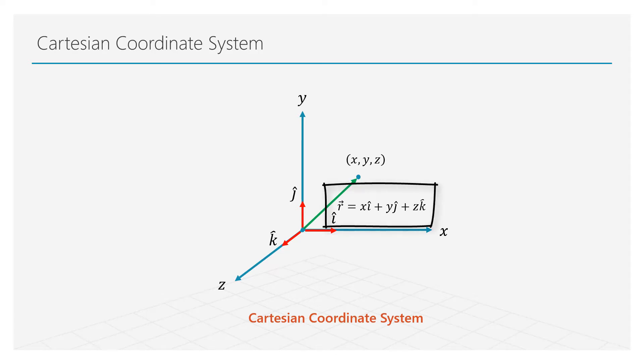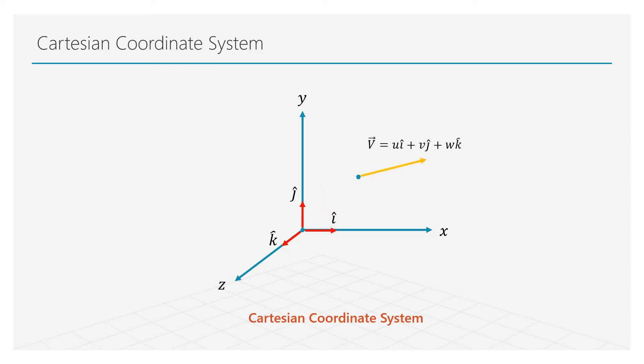We use a velocity vector to define the velocity of the fluid, and its definition is in terms of its individual components u, v, and w along the x, y, and z directions respectively. Other scalar quantities such as pressure and temperature are functions of both space and time.